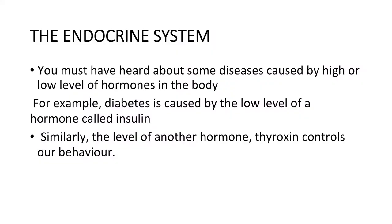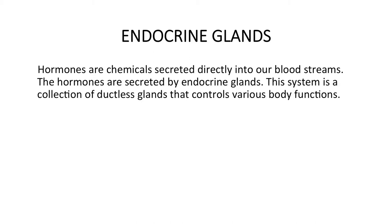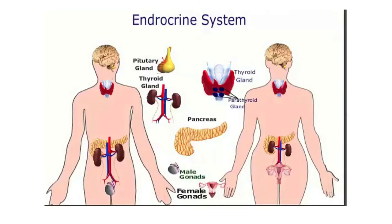Let's start with the first objective: the endocrine system. You must have heard about some diseases caused by high or low levels of hormones in the body. For example, diabetes is caused by low levels of a hormone called insulin. Similarly, the level of another hormone, thyroxine, controls our behavior. Hormones are chemicals secreted directly into our bloodstreams, and they are secreted by endocrine glands.